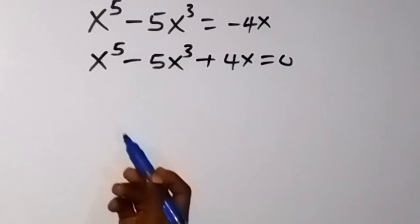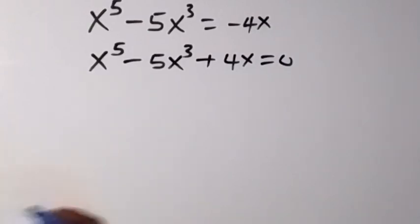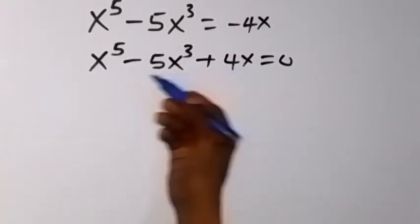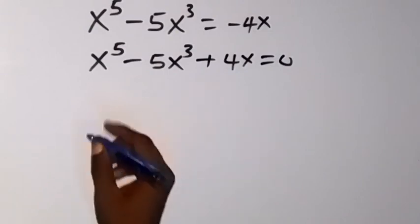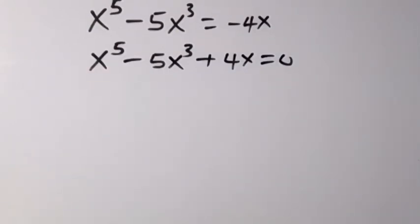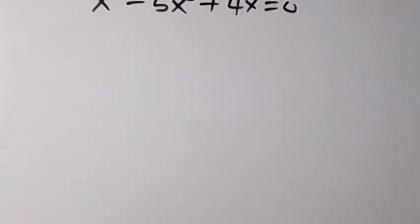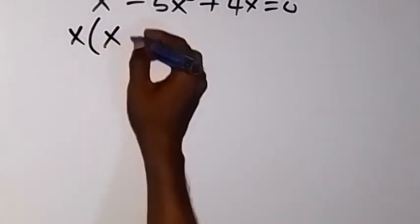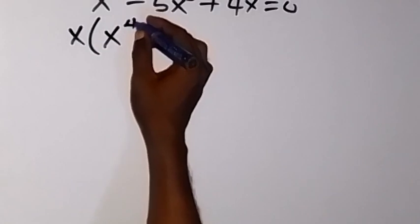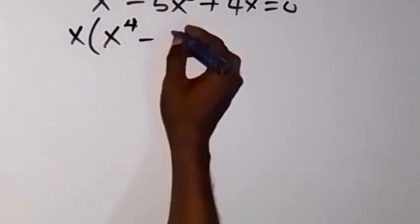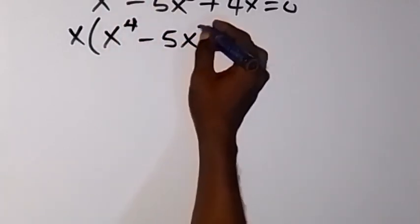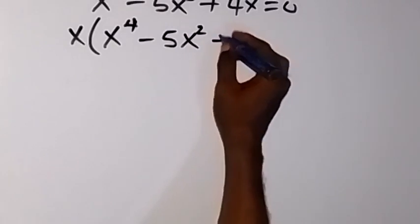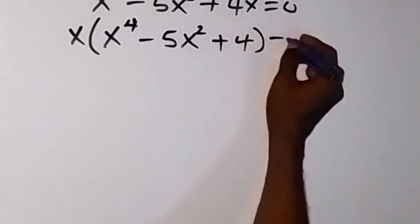From there we can still factor out x because we can see that x is common on the left hand side, so that will be x outside the bracket now. So we have x(x⁴ - 5x² + 4) = 0.